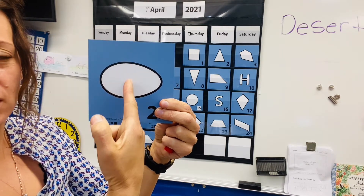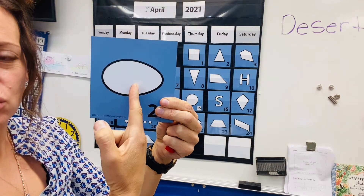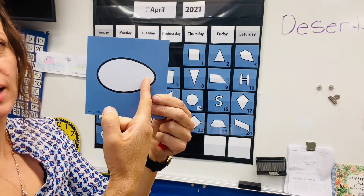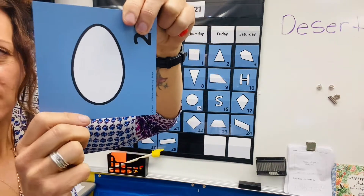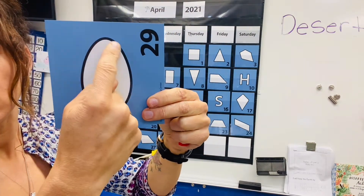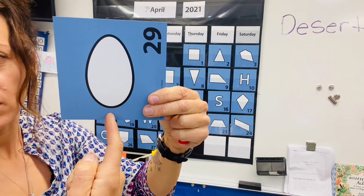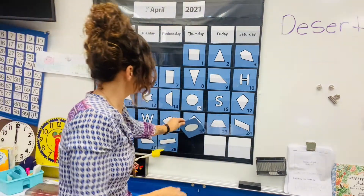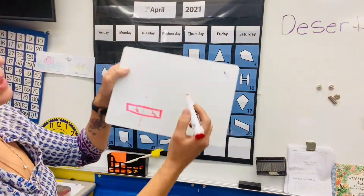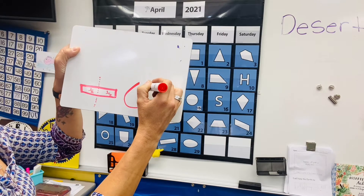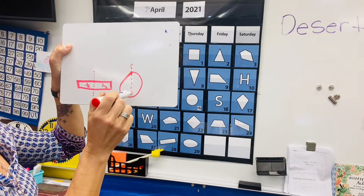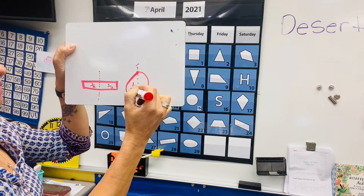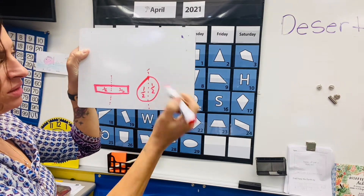So if we drew a line directly down, it wouldn't be exactly symmetrical because this side has a rounder edge and this side is a little bit more narrow and comes to a point. But if we turn it this way and drew a line directly down, it would look a little bit more symmetrical. So let's draw a giant egg like an Easter egg on our whiteboard. See if you could cut that right in half so it's symmetrical — the same on both sides for the most part. We have one half and one half.